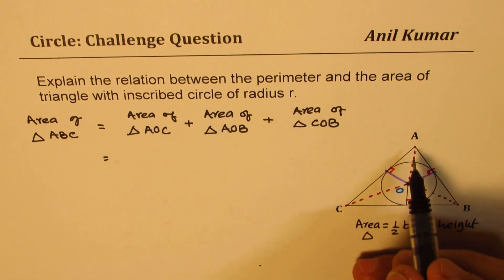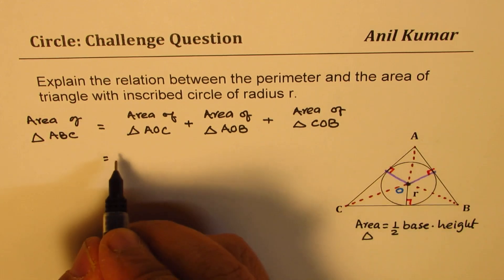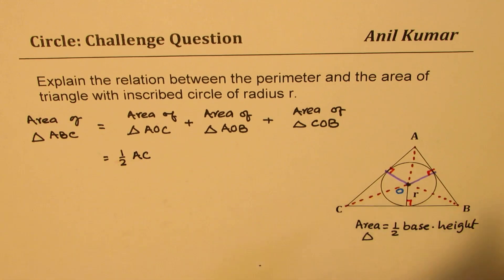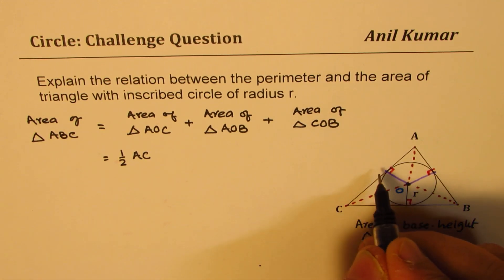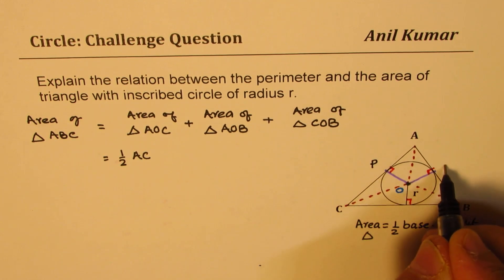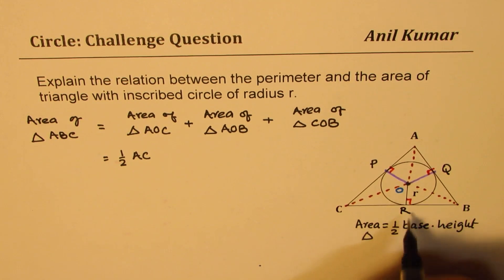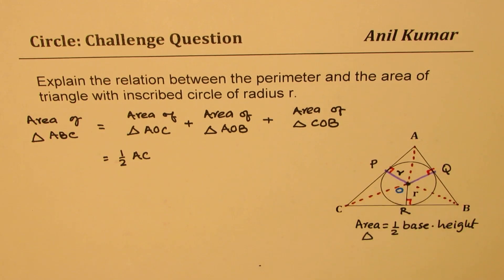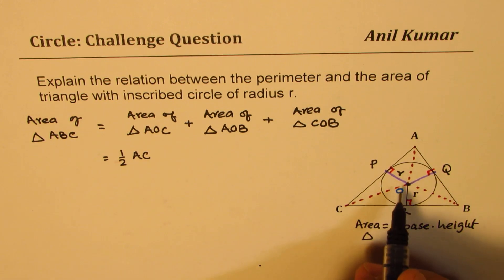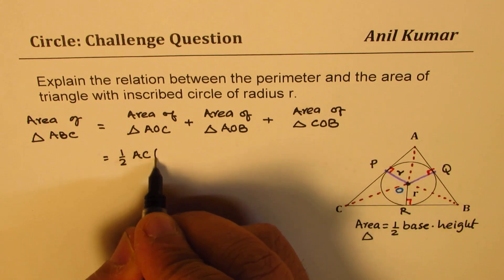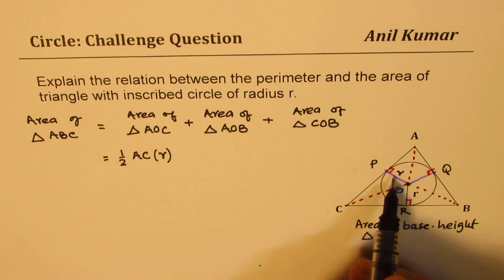In triangle AOC, the base is AC, so we can write this as half of AC times height. So O, let's call these points as PQR. So OP, which is equal to R. So we can say AC times OP, which is R for us, the radius.